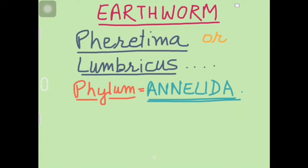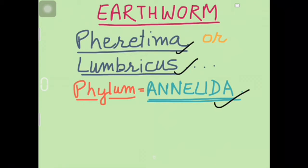Now some important animals we will cover. First one being earthworm, yani Pheretima, yani Lumbricus. India mein yeh dono genus yani genera milte hai aur Pheretima posthuma bhi bol dete hai, isko matlab genus or species Pheretima posthuma. Phylum Annelida hai iska. Yeh ek invertebrate hai yani non-chordate hai yeh. Terrestrial animal hai.